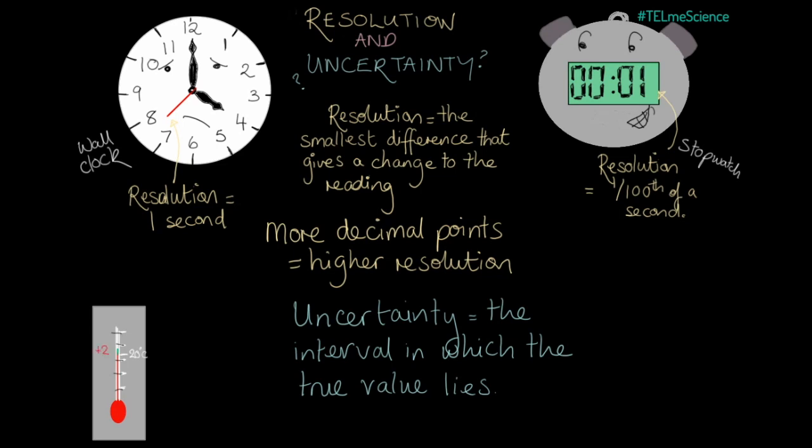You might instead say that a temperature is 20 degrees plus or minus 2 degrees at a confidence level of 95%. What does that mean? It means that you're 95% certain the true temperature is between 18 degrees and 22 degrees, most probably at 20 degrees.